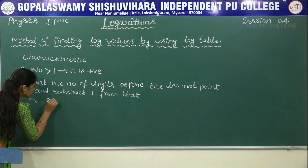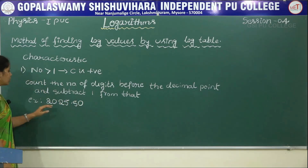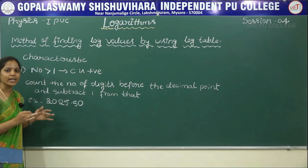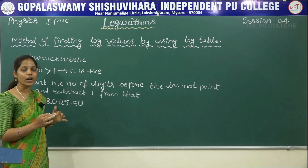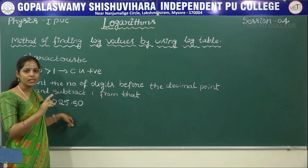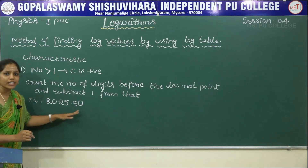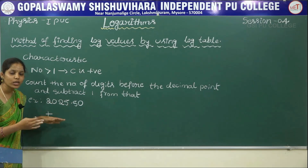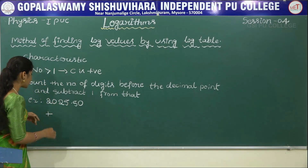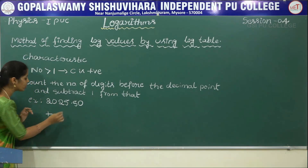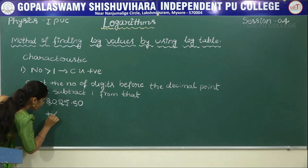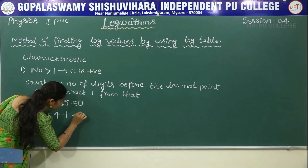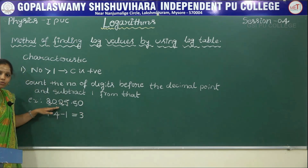For example, consider 2025.50. This number is greater than one, so its characteristic is positive. We count the digits before the decimal point: 1, 2, 3, 4 — four digits. We subtract one from that: 4 minus 1 gives 3. So 3 is the characteristic of this number.